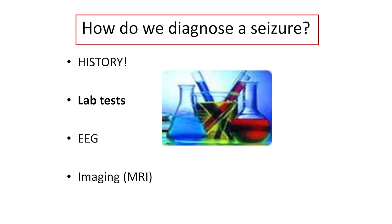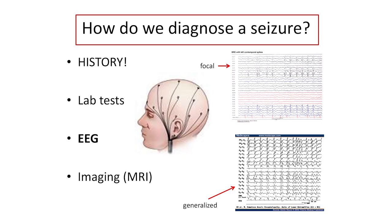By the description of the seizure, we can determine whether it's a focal seizure — starting in one part of the brain — or starting in the whole brain at once. We sometimes use laboratory tests to diagnose a seizure. There's no single test, but we try to rule out infection, metabolic abnormalities, and in the case of Rett, get a genetic diagnosis.